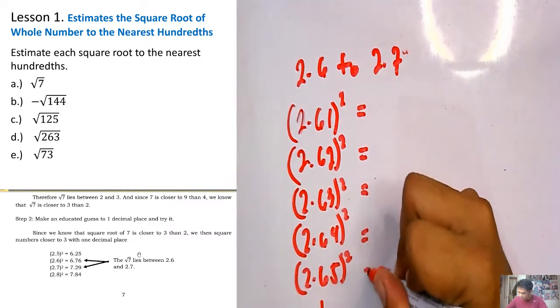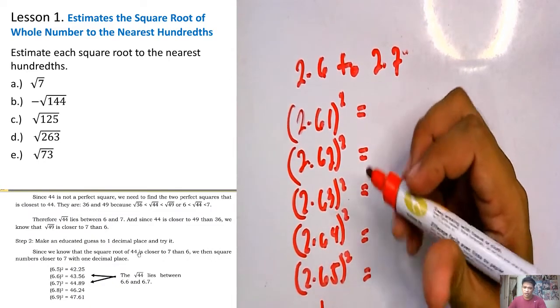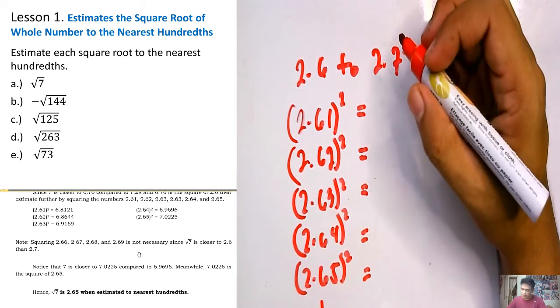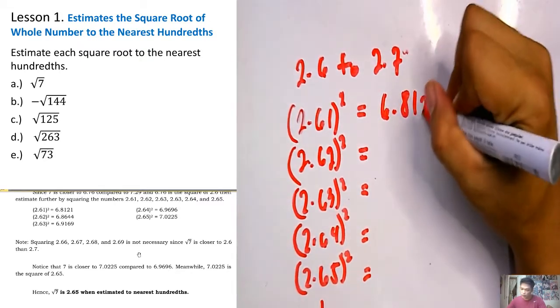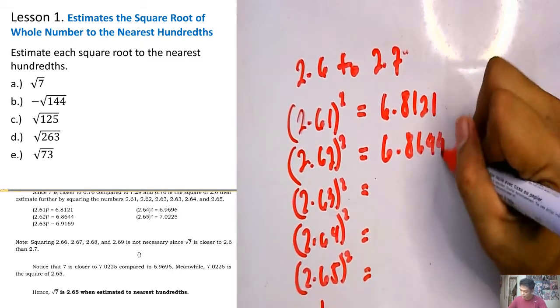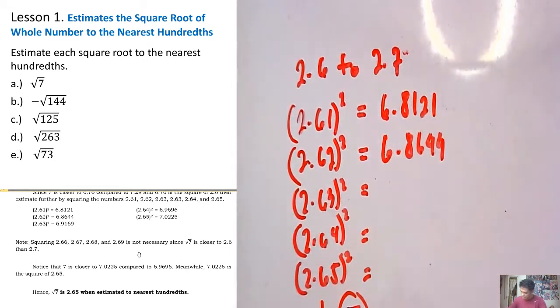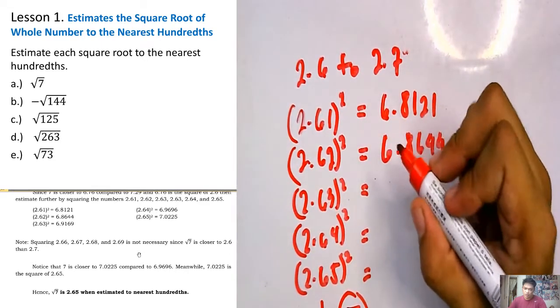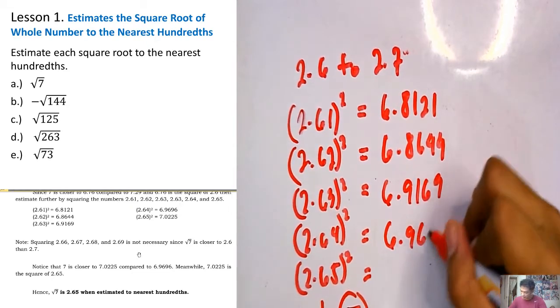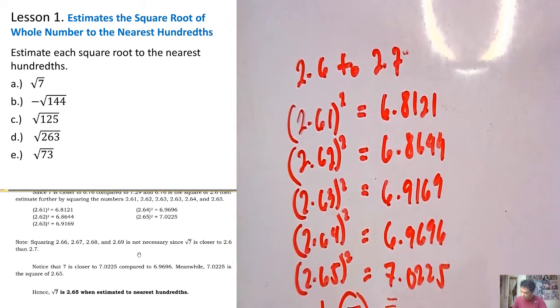2.61 times 2.61 using the calculator, or manual multiplication, is 6.8121. We have 2.62 times 2.62, which is 6.8644, and our target is to reach 7. Next, 2.63 times 2.63 is 6.9169, 2.64 times 2.64 is 6.9696, 2.65 times 2.65 is 7.0225. Now we reach 7, so we end here.